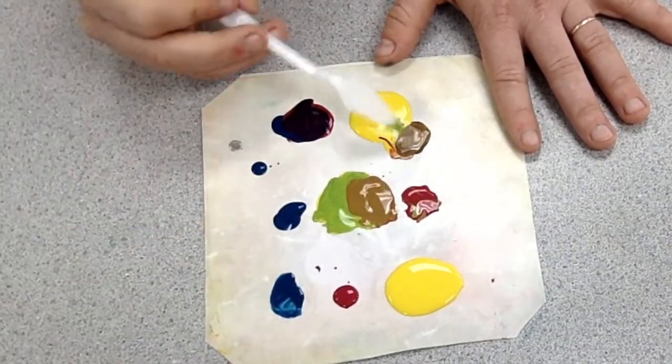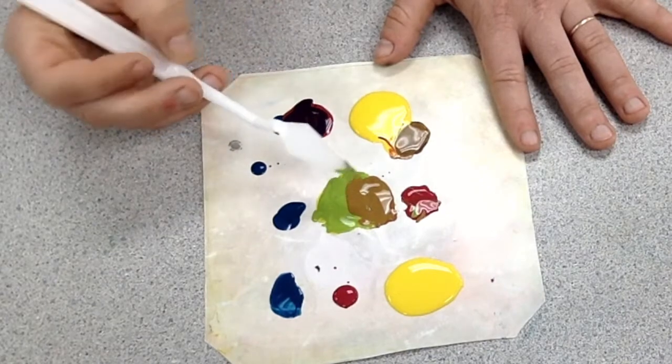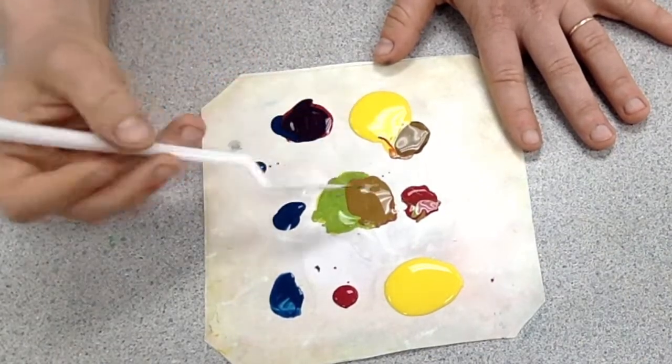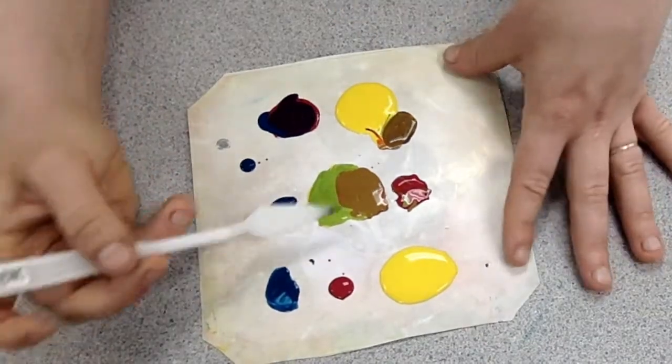Now don't forget these browns that you get, you can always add a teeny bit of black or a teeny bit of white if they feel too light or too dark.